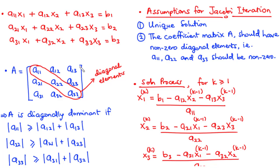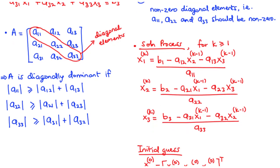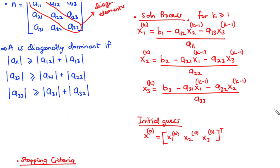Considering this same 3x3 system, in order to solve it using the Jacobi iteration, we need to first make x1, x2, and x3 the subject from each of the three equations — equation 1, equation 2, and equation 3 — respectively.